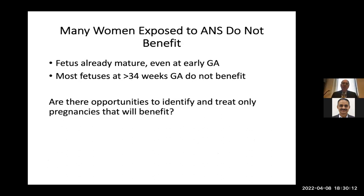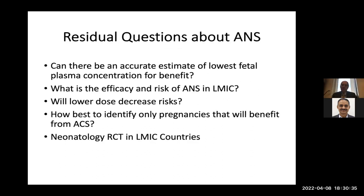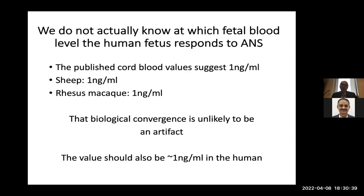Many women exposed to antenatal steroids do not benefit — the fetuses are already mature even at early gestational ages. Most fetuses at greater than 34 weeks gestation don't benefit because they have a very low risk of RDS or death. The residual questions include: we do not know the actual low dose that the fetus needs to respond to. In sheep and macaques, it's 1 nanogram per milliliter, and because of biological convergence across species, it is unlikely to be an artifact. We can figure out fetal exposure by measuring these things in cord blood.